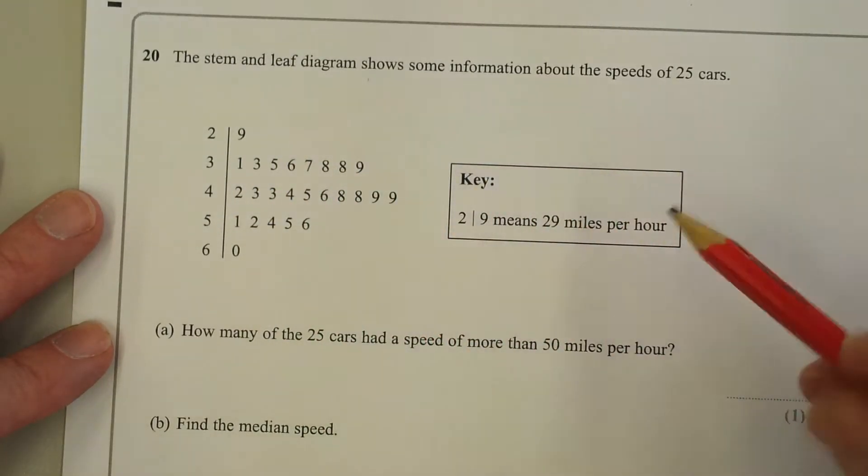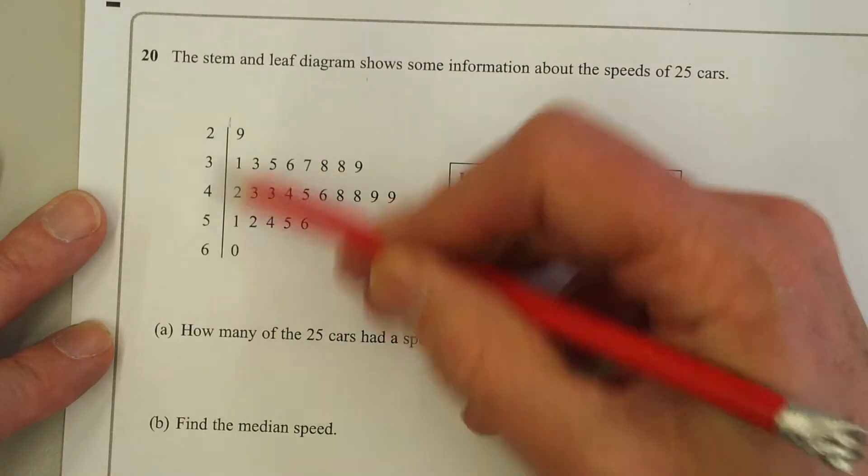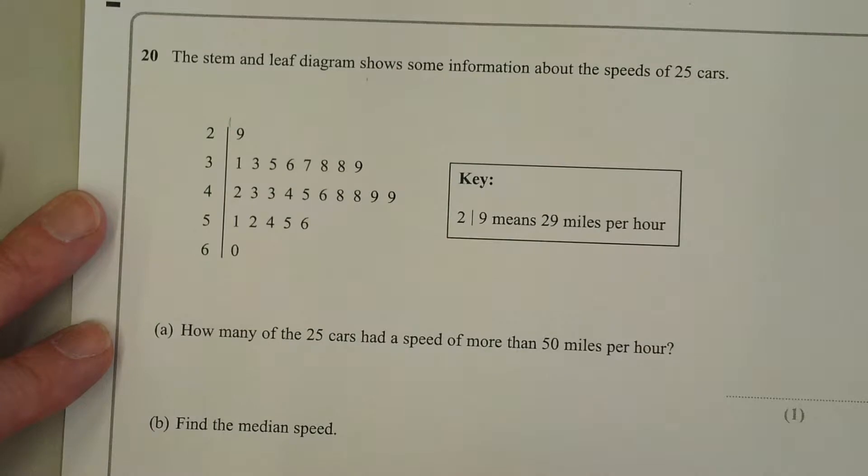Now you need to check the key. 2 line 9, this line here, means 29 miles per hour.